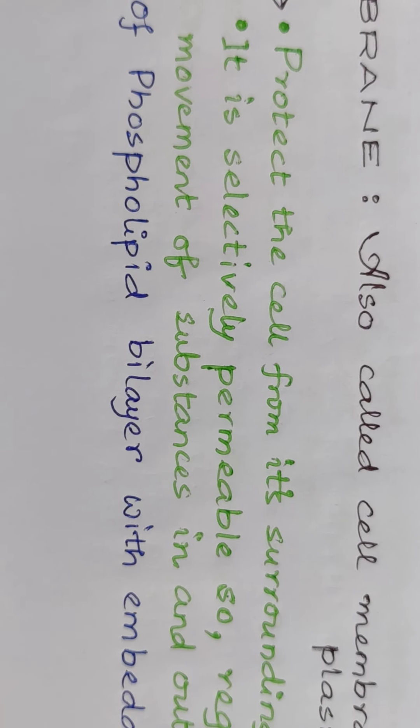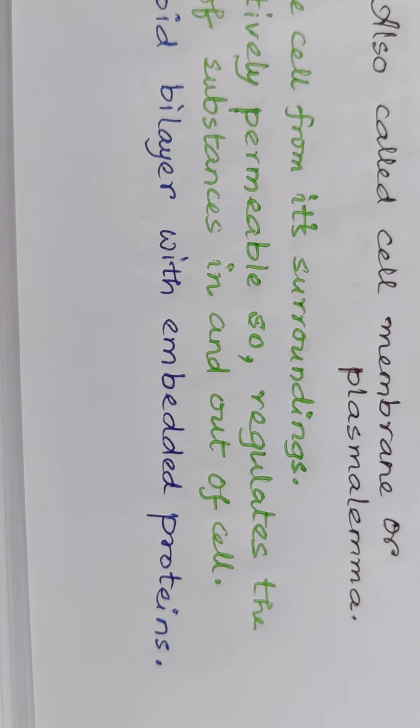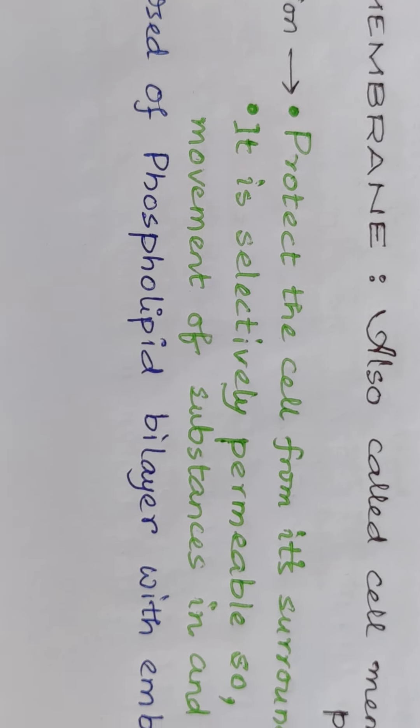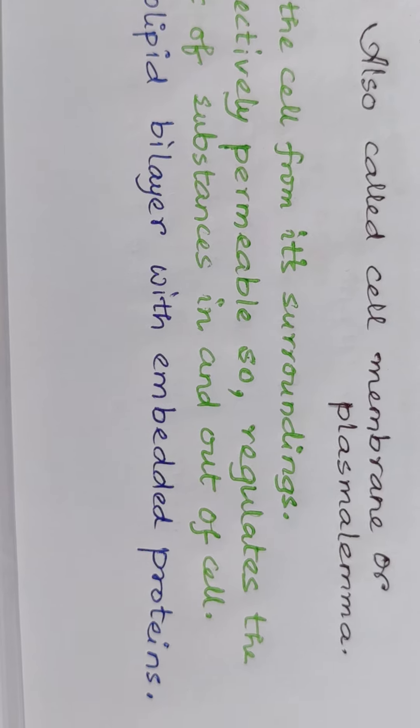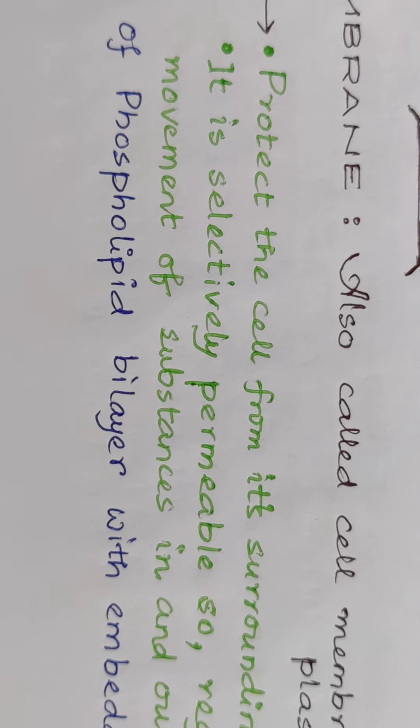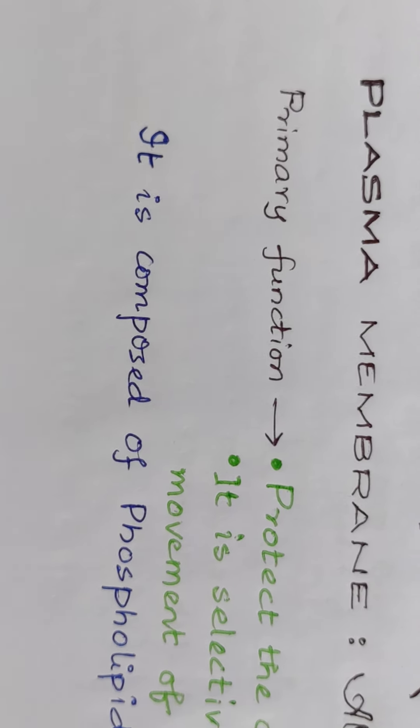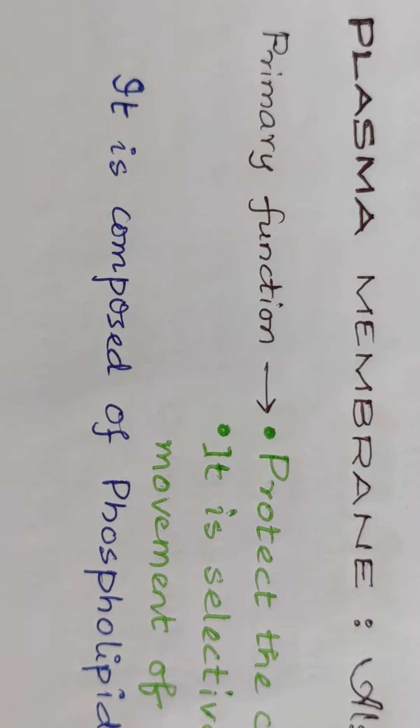What does selectively permeable mean? It means it regulates the movement of substances in and out of the cell. It does not allow all substances to pass through, it restricts some.